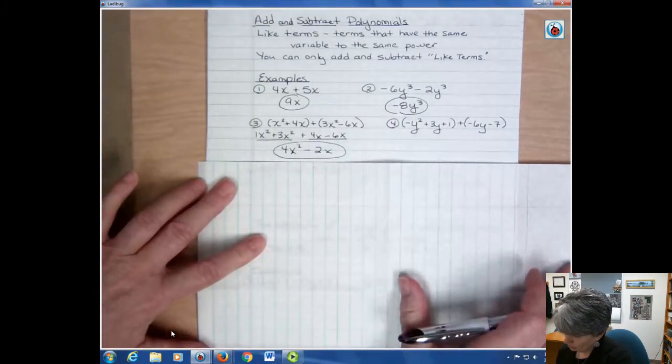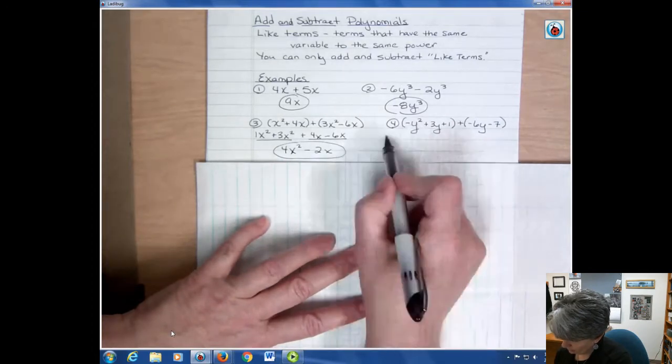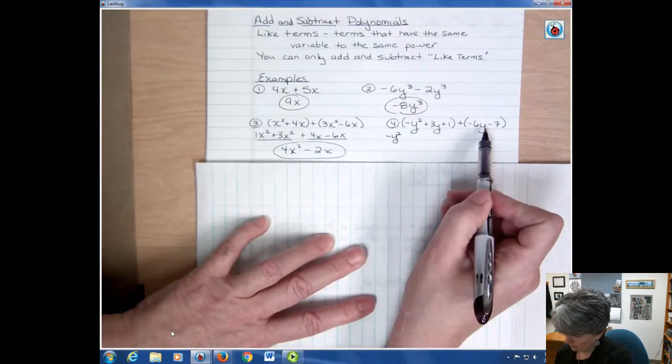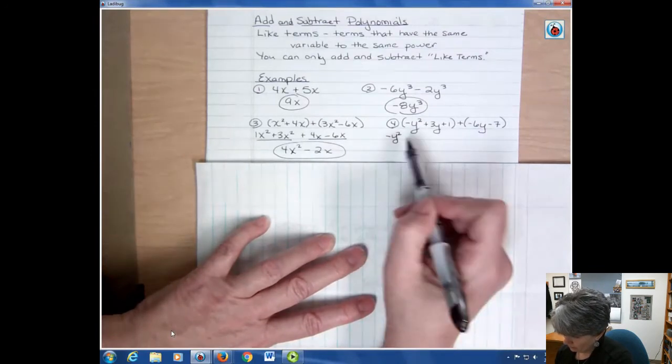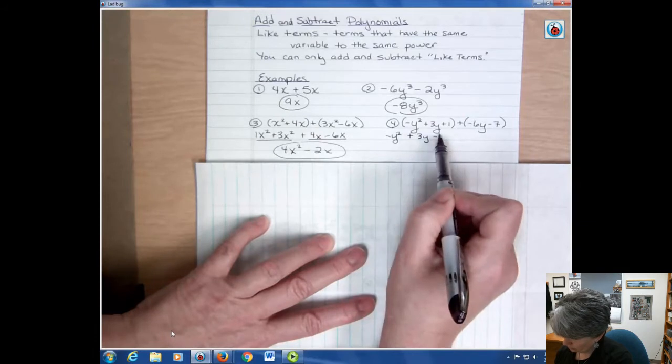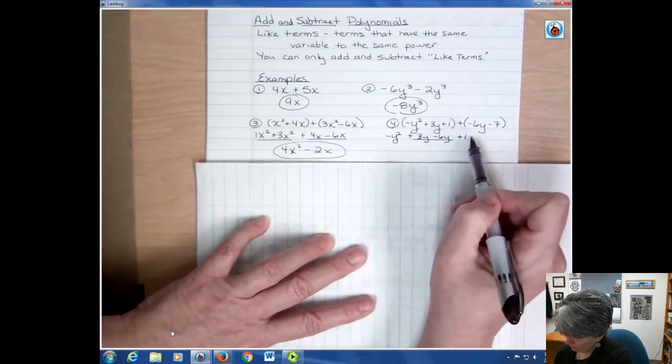Over here, notice I have negative y to the second power. There is no y to the second power over here, so there's nothing I can add to that. Then I have plus three y and minus six y—those are like terms I can combine. And then I have plus one and minus seven.